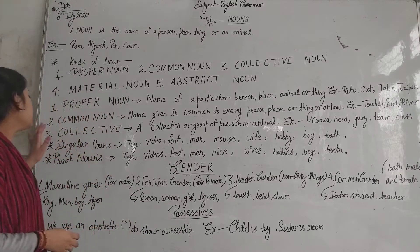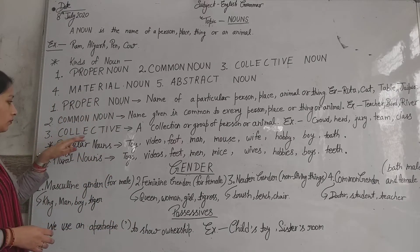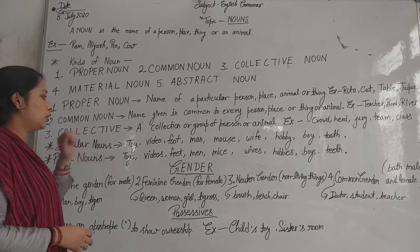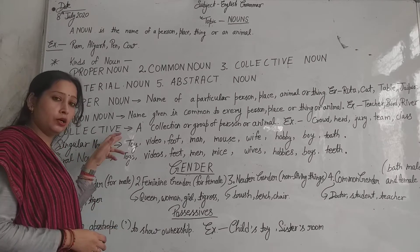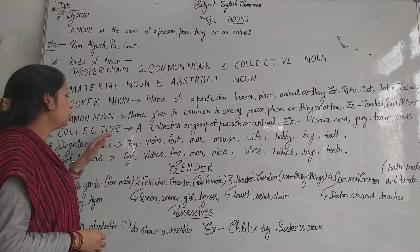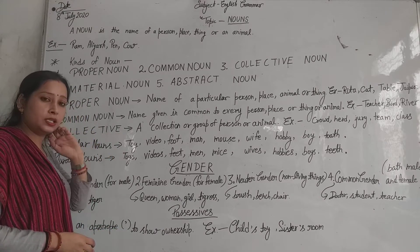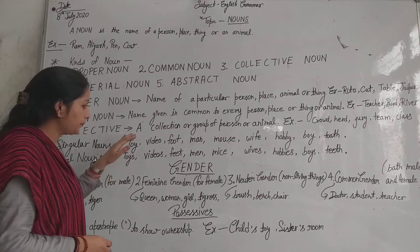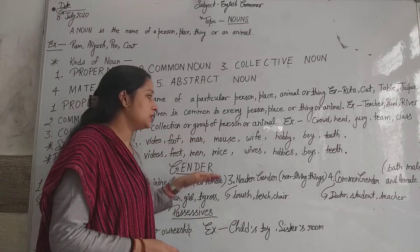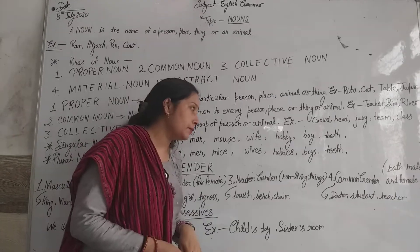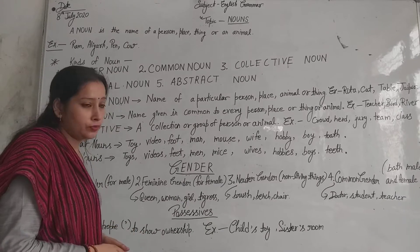Now we go to the third topic: collective nouns — Samooha Vachak Sangya. A collection or group of persons or animals is called a collective noun.